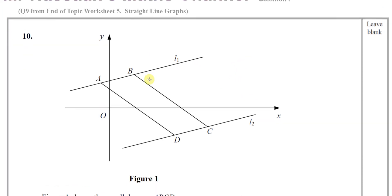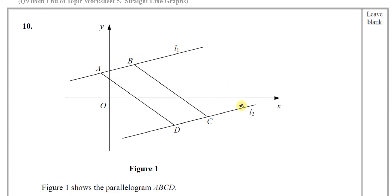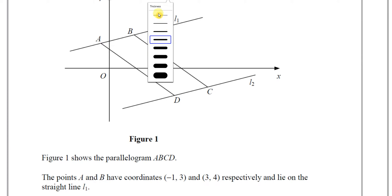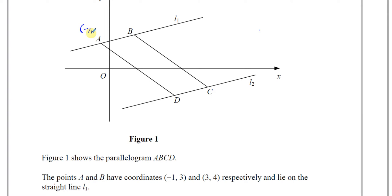So here we're given a diagram with some lines — line 1, line 2 — some points A, B, C, D, and a set of axes. Figure 1 shows a parallelogram ABCD, which means the opposite sides are parallel and equal in length. The points A and B have coordinates negative 1, 3 and 3, 4 respectively. And they lie on the straight line L1.